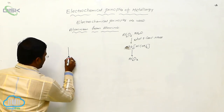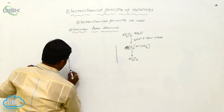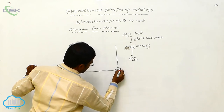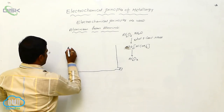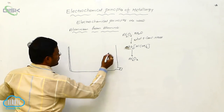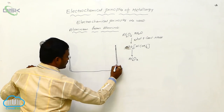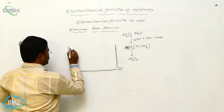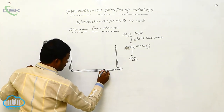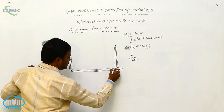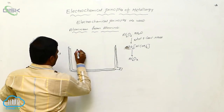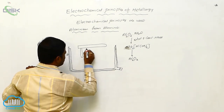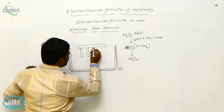In the electrochemical process, this alumina is used in an arrangement to explain the extraction of aluminium from alumina. The setup has an outer layer and an inner layer. Some graphite electrodes are placed in this experimental setup.